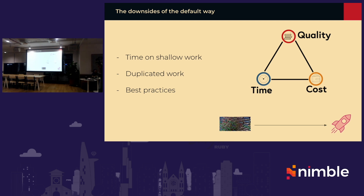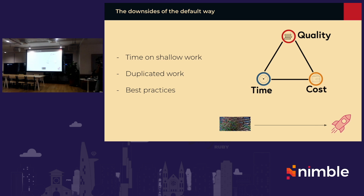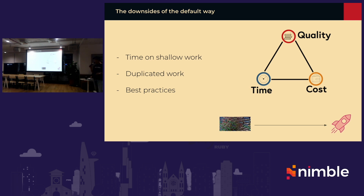The first issue is about time. If you do `rails new` and after that you have to add changes, do the config, create the Docker setup, create the deployment, and many other things — this is kind of shallow work. Why is it shallow work? Because this kind of thing we can automate using some kind of script. The second thing is about duplicate work. For example, if you have another project, you do `rails new` again and have to do the same things you did before with the previous project.